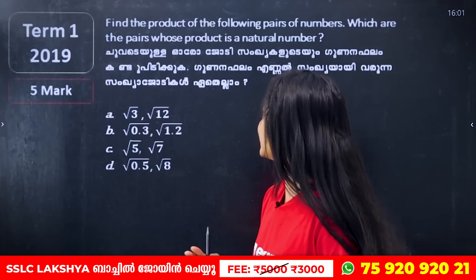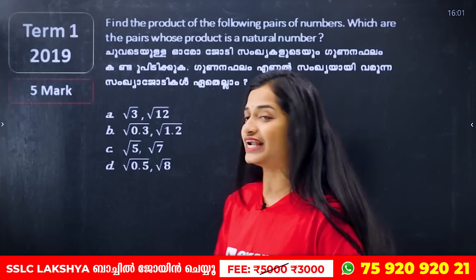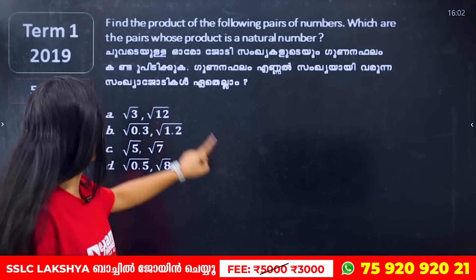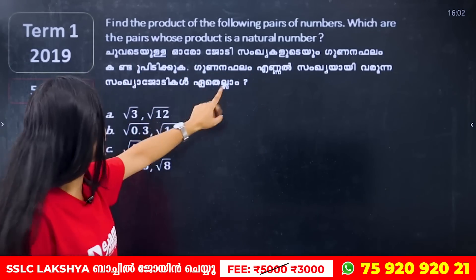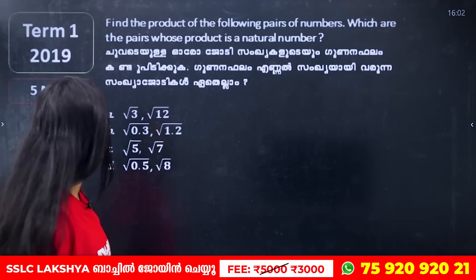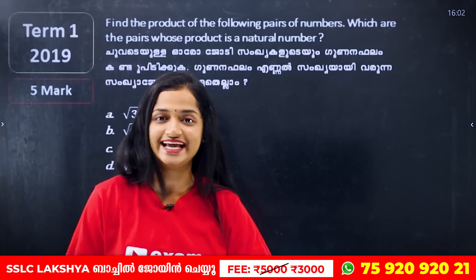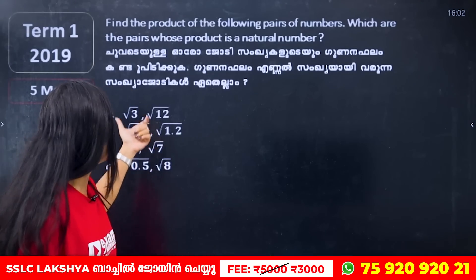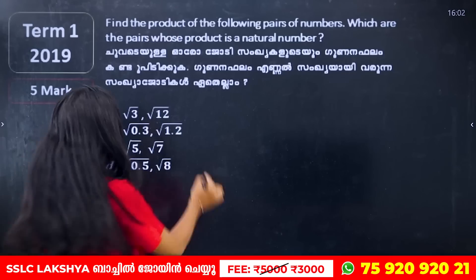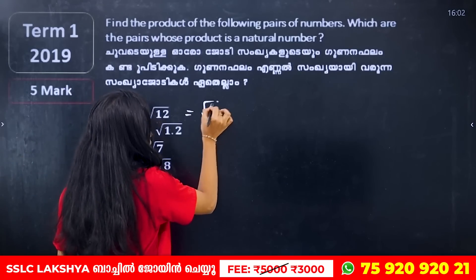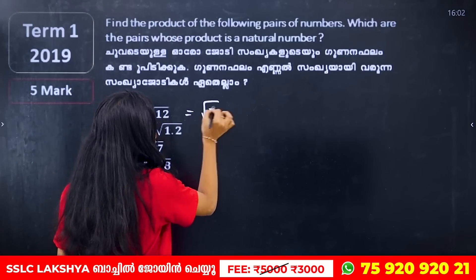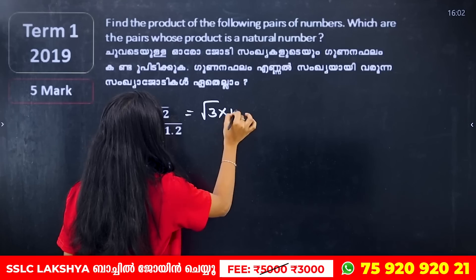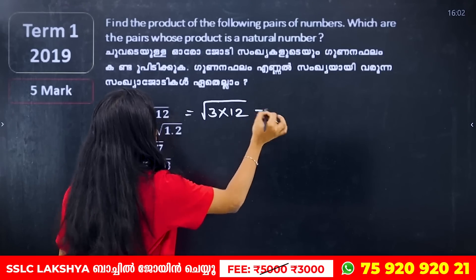The first question is: Find the product of the following pairs of numbers. Which are the pairs whose product is a natural number? We are going to find the product.